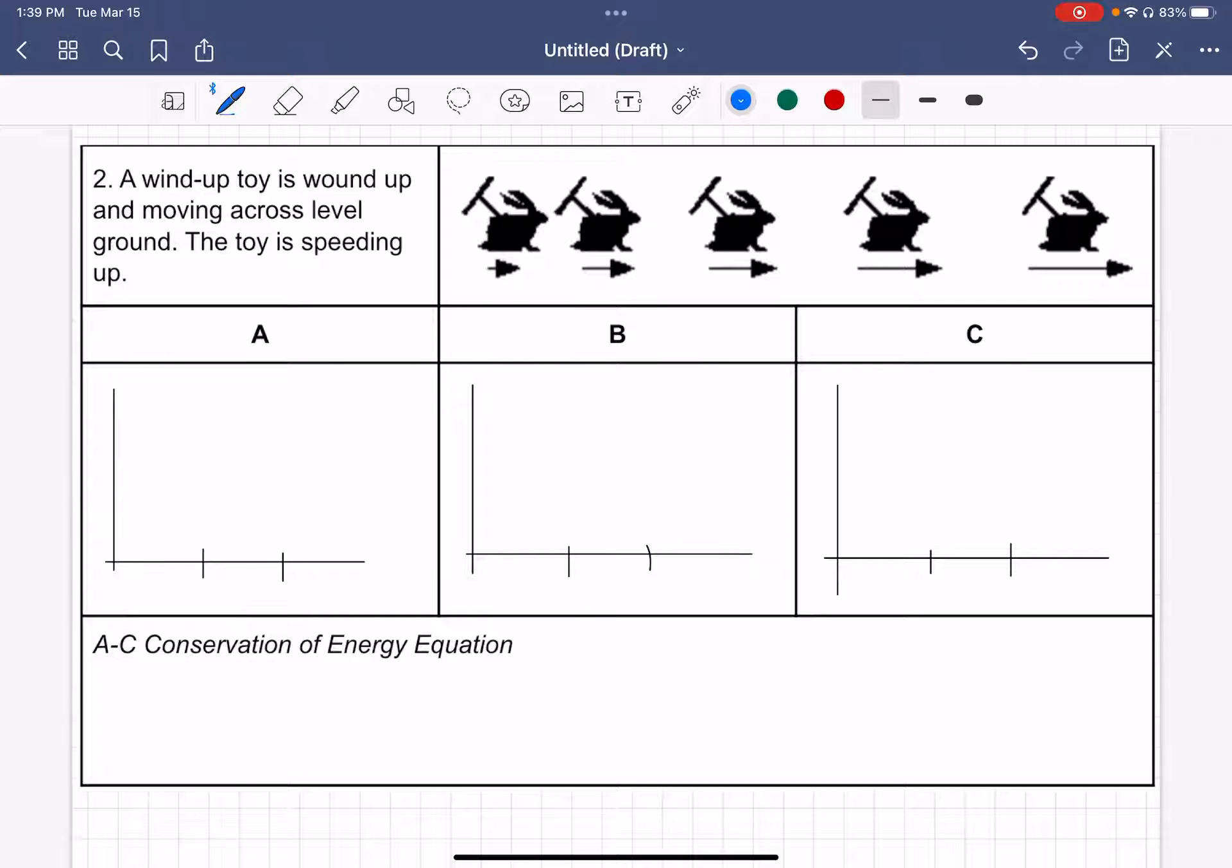In this situation, I am looking at a wind-up toy that is wound and moving across the ground, and it is speeding up. These are the three points I'm going to use as my snapshots: the very beginning, the middle, and the end.